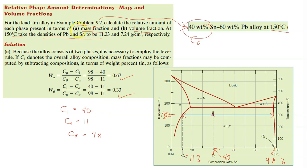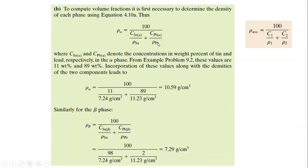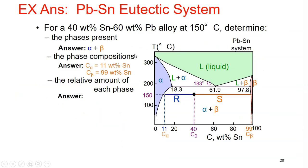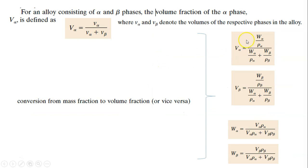Now we're going to look at how to solve Part B, which is the volume fraction. To compute volume fraction it is necessary to determine the density of each phase. We need to calculate the density of each phase because if you look at the volume fraction formula shown in the previous slides, you need both the mass fraction and the density of each phase.